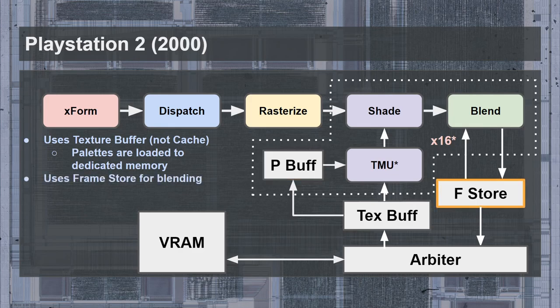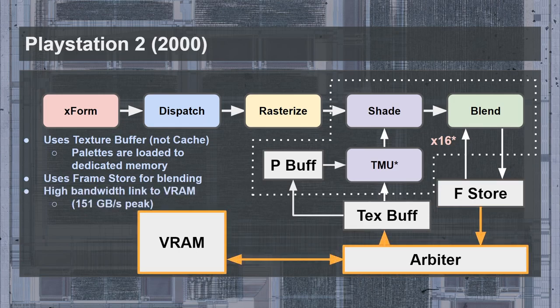Like with the texture buffer, a frame store buffer is also used to support the high-bandwidth read-modify-write operations of blending. This was also mentioned to be similar to a DRAM row buffer, only capable of holding a single page at a time. There was an ultra-high bandwidth link to the VRAM from the internal buffers — one source claimed it could move 1 kilobyte per cycle, giving a peak bandwidth of 151 gigabytes per second, which is 3.2 times higher than the massive internal pipeline bandwidth. The VRAM transfer rate would not have been sustainable, however, given that each new transaction would require a new row activation.